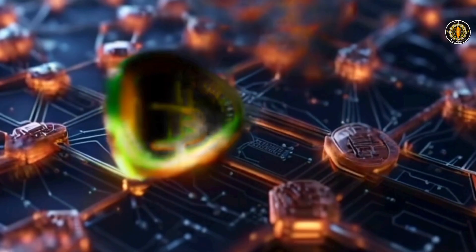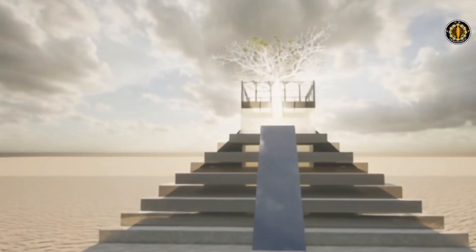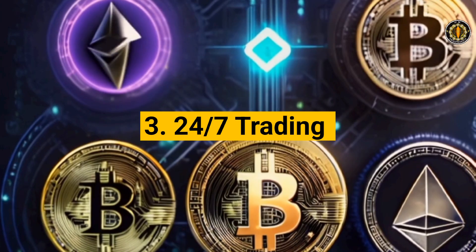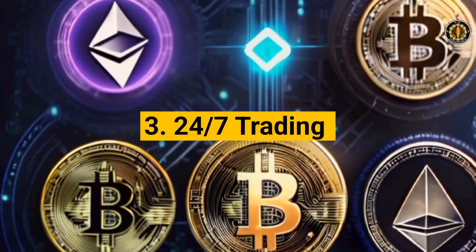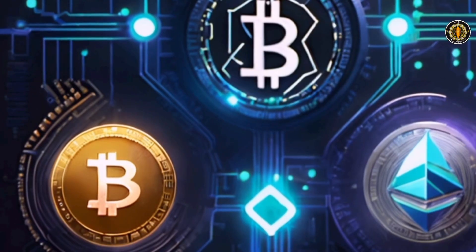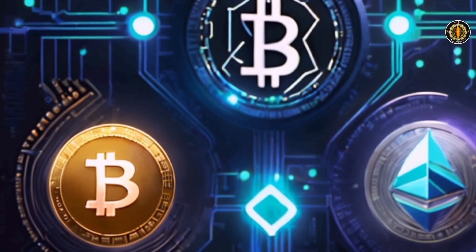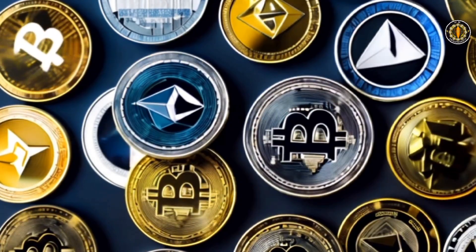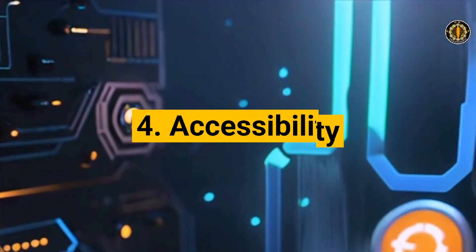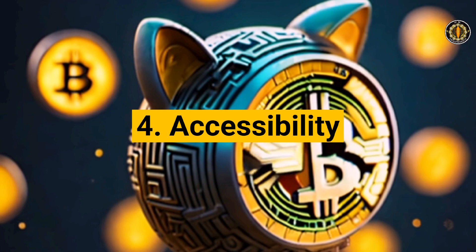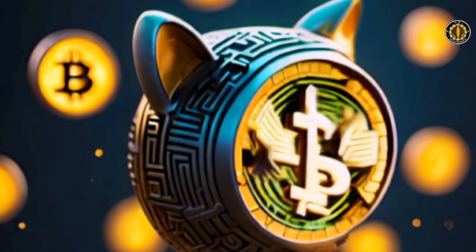Three: 24/7 trading — unlike traditional stock markets, cryptocurrency markets operate 24/7, allowing traders to execute transactions at any time. Four: accessibility — cryptocurrency trading is accessible to anyone with an internet connection, providing opportunities for individuals worldwide to participate in the market.